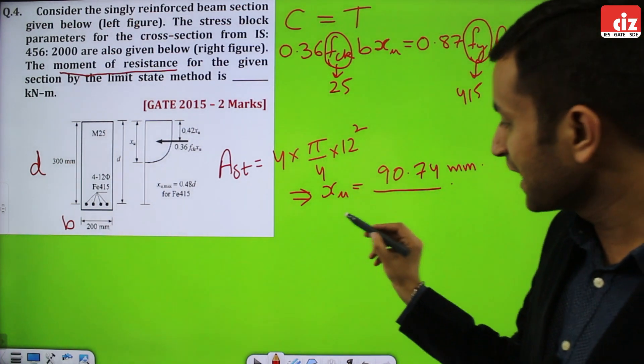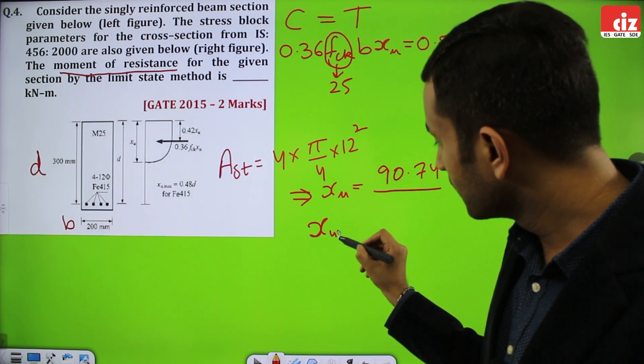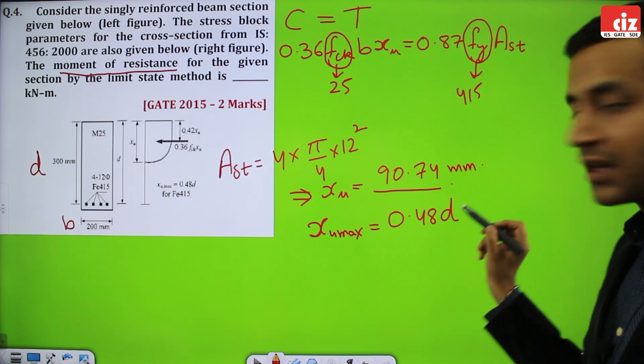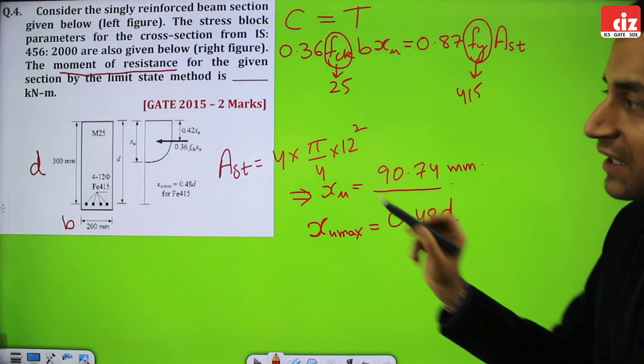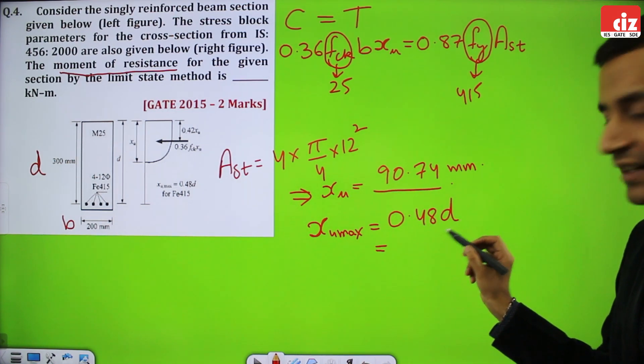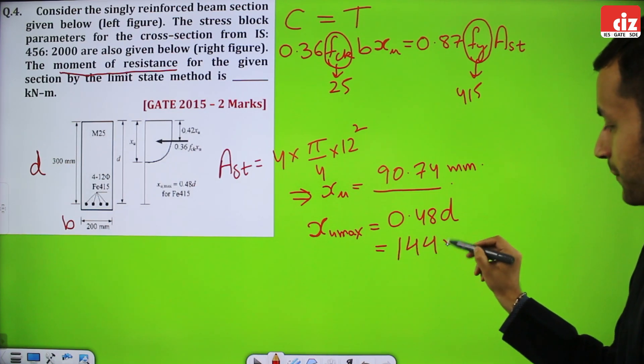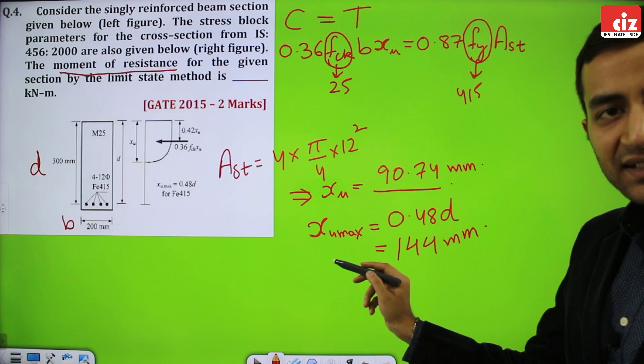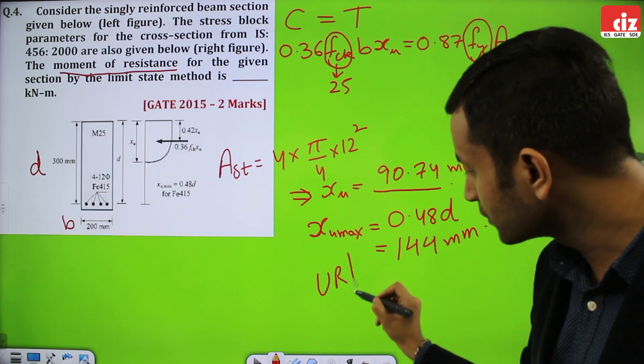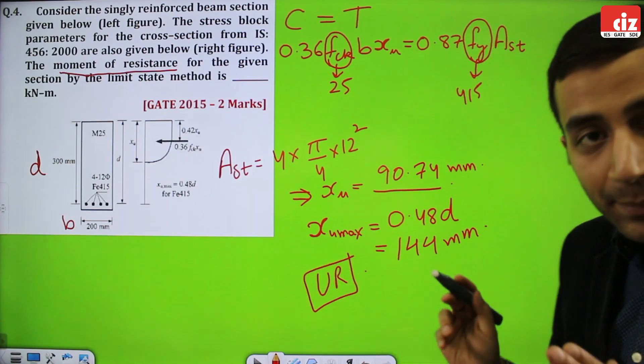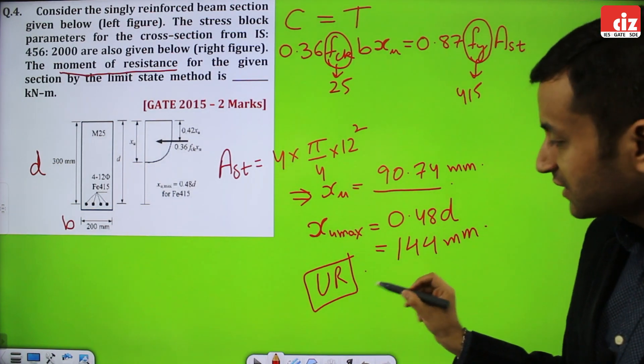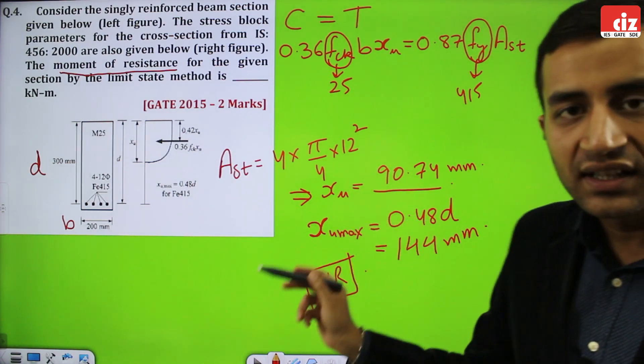Now XU compare it to XU max. XU max for FY 415 is 0.48D, 0.48 into effective depth, so effective depth is given 300 mm. This becomes 0.48 multiplied by 300 means 144 mm. Now you compare XU and XU max, then you know that XU is less than XU max. This implies the section is under reinforced. Whenever we have to calculate moment of resistance, we have to check whether the section is UR, OR, or balanced. This section is UR, under reinforced. Now I will find its MOR.